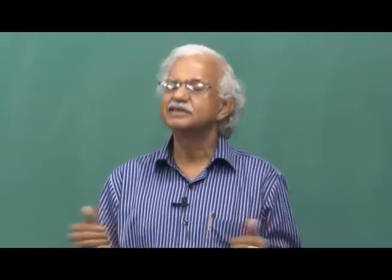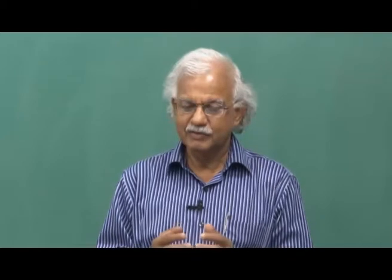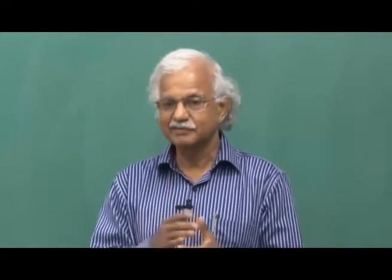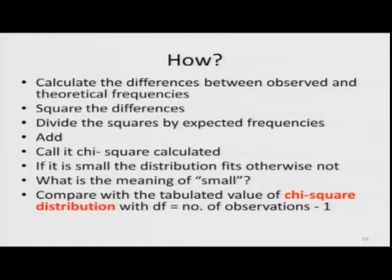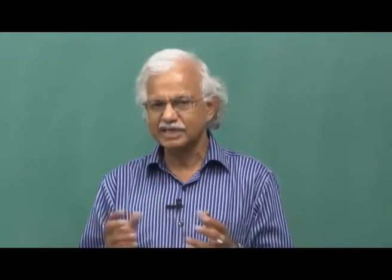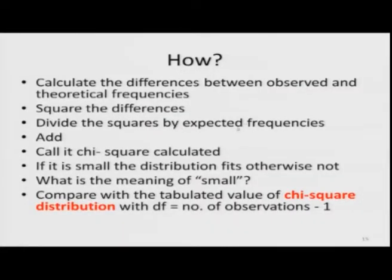You will have as many differences between observed and expected frequencies as the number of values of the random variable, and you would like a single summary value for that difference. As in calculating variance, you can square the differences — because some are positive and some negative, simply adding gives zero. You then divide the squared differences by the expected frequencies.